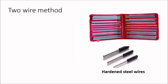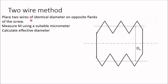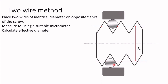In any of these three methods, we use hardened steel wires, which are available in sets of three wires each with standard diameters. In the two wire method, first we place two wires of identical diameter on opposite flanks of the screw. Then we measure M using a suitable micrometer — the micrometer anvils contact the two wires and M is this total distance. Once we have M, and assuming the pitch is also known, from these two values we can determine the effective diameter of the screw thread.